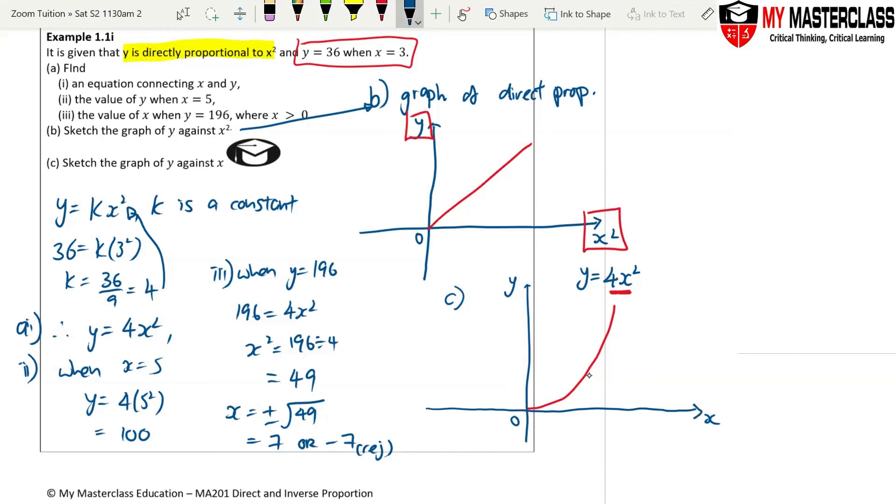So this is if you are told to draw y against x. Because y is not directly proportional to x, y is directly proportional to x square. So when you have the x square, it's directly proportional, then it's going up. But if you're drawing y against x, this is an advanced question.